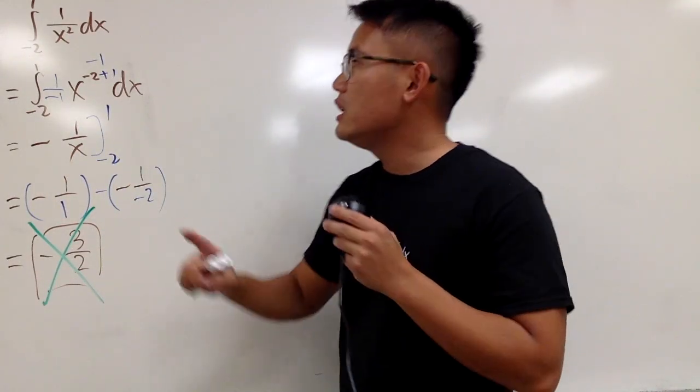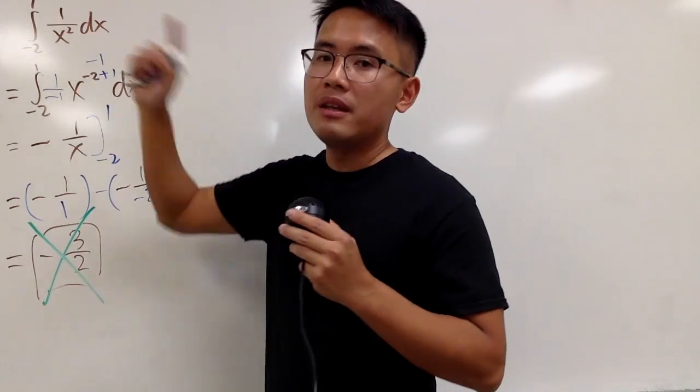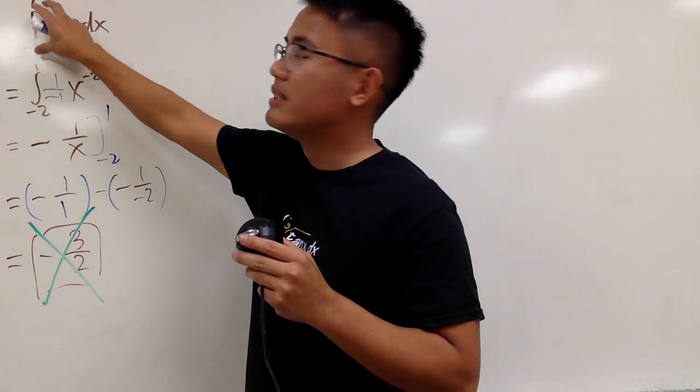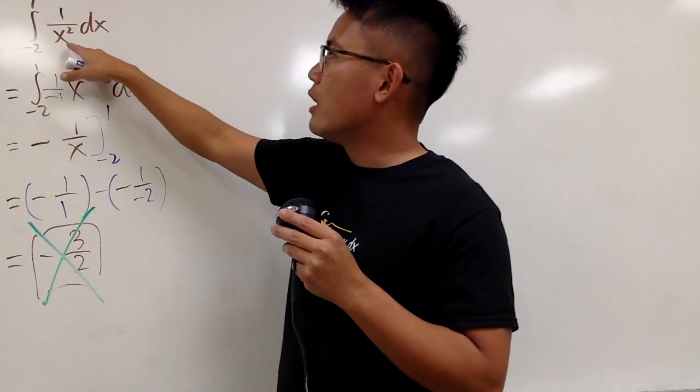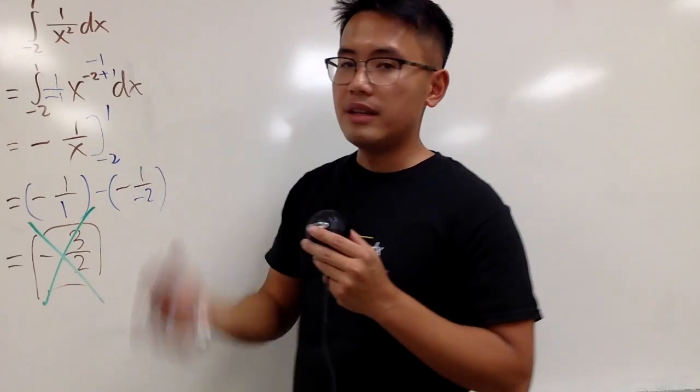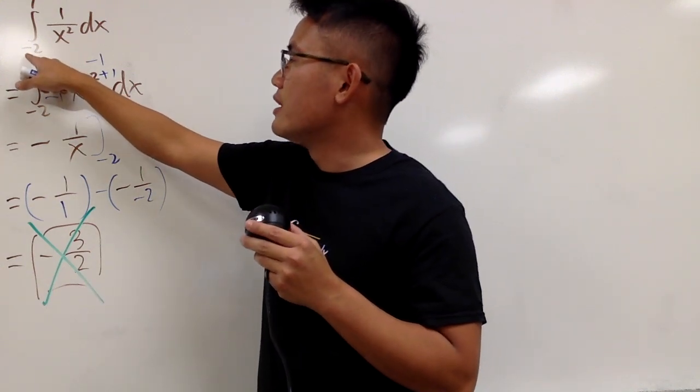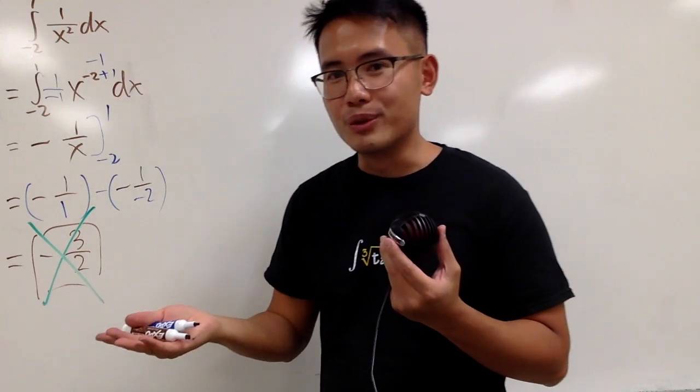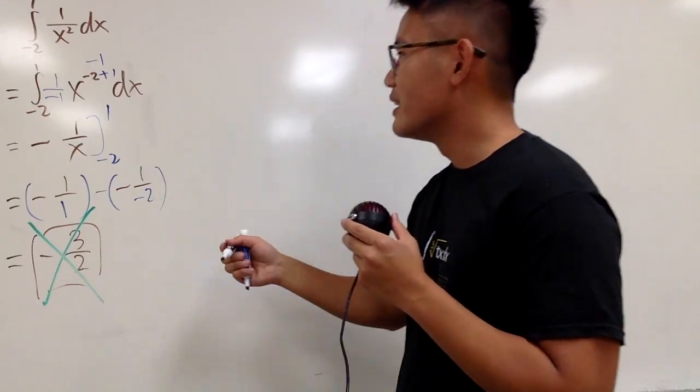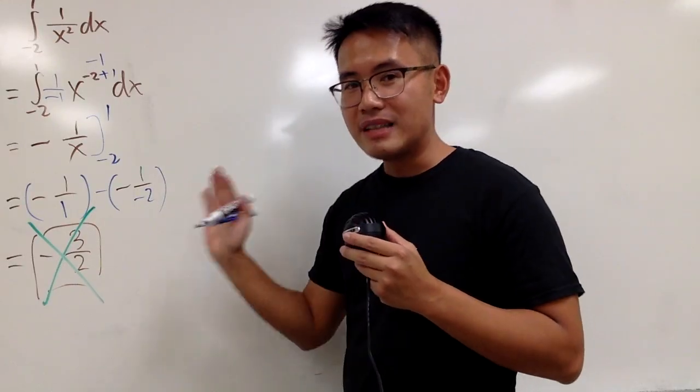However, that only works if you have the function being continuous on this interval. And as we all know, when we have x squared in the denominator, x cannot be 0. And you do go from negative 2 to 1, so you kind of broke the rule, right? We did, unfortunately.